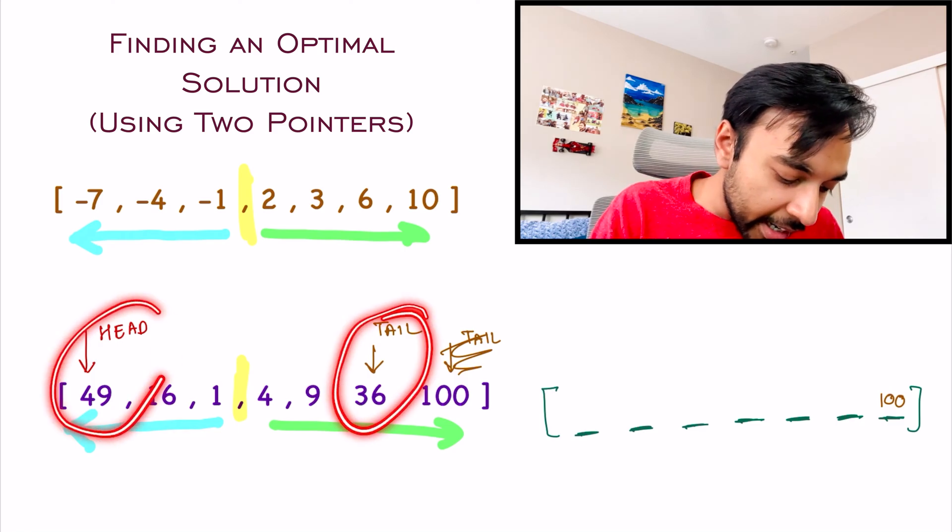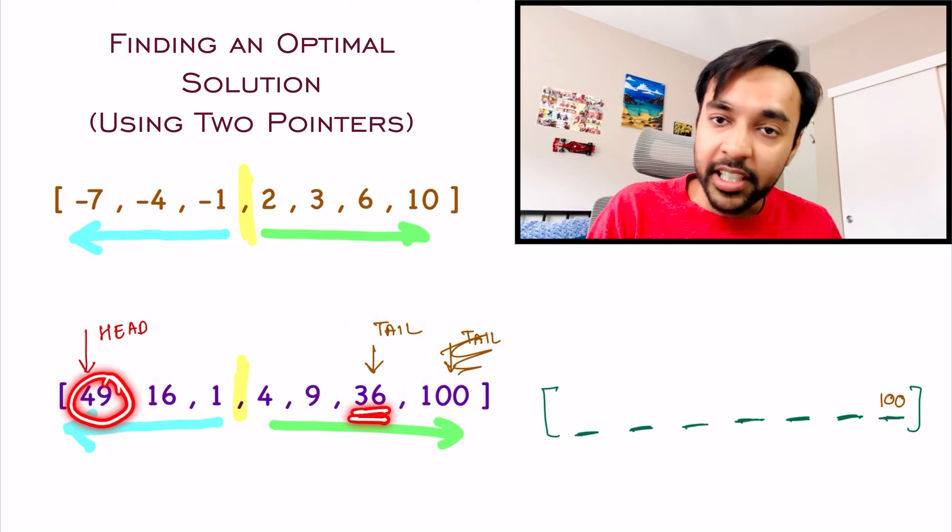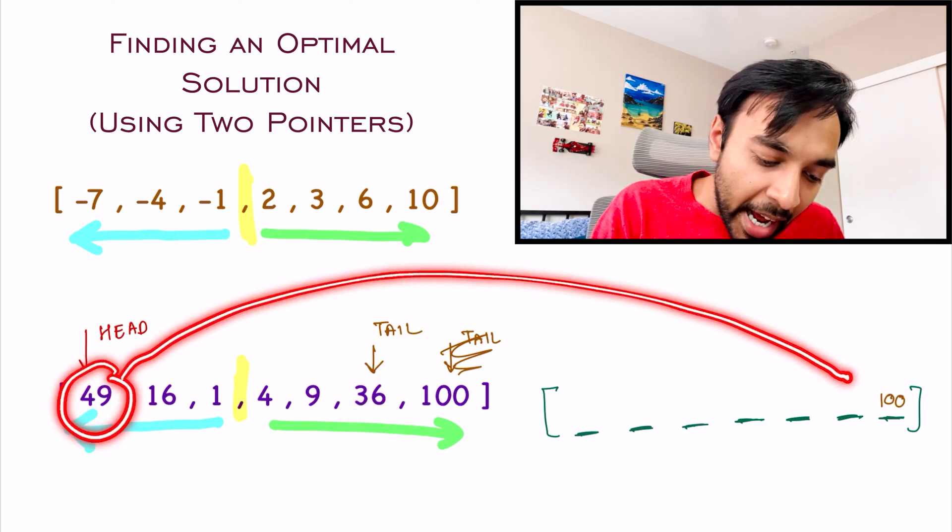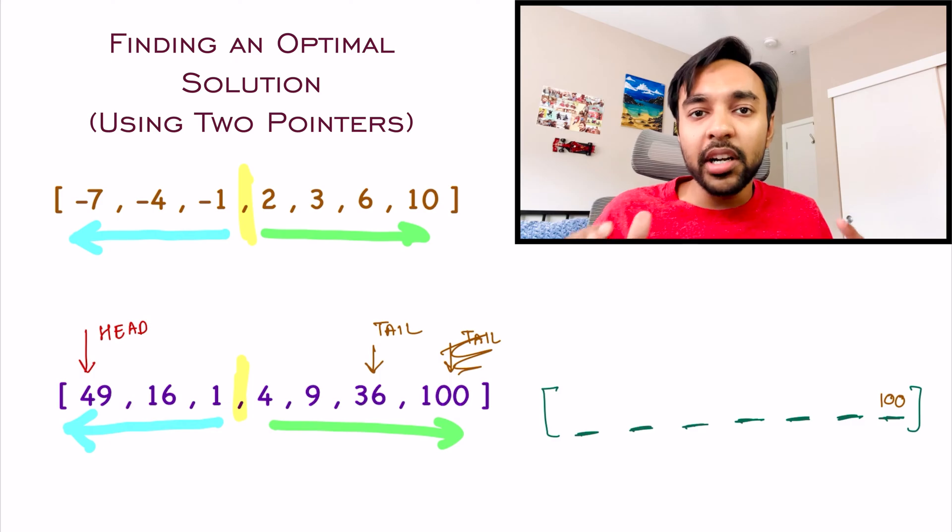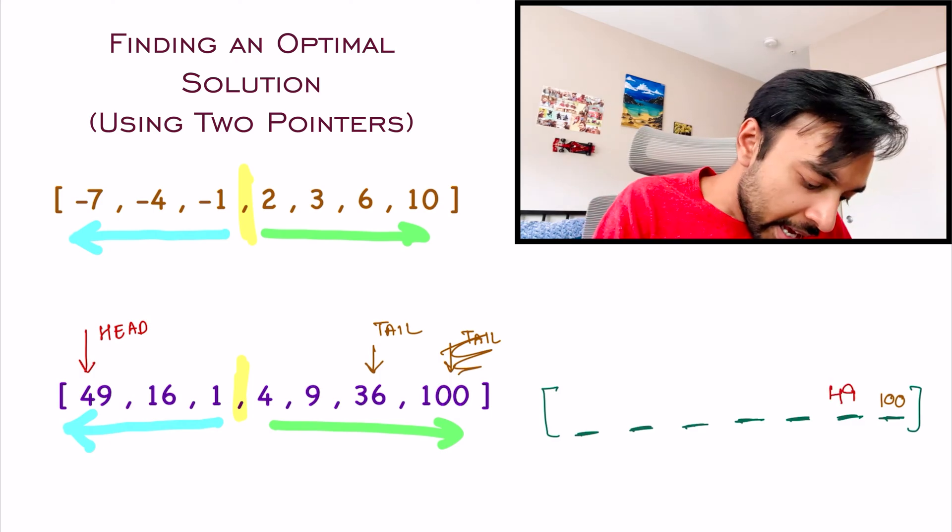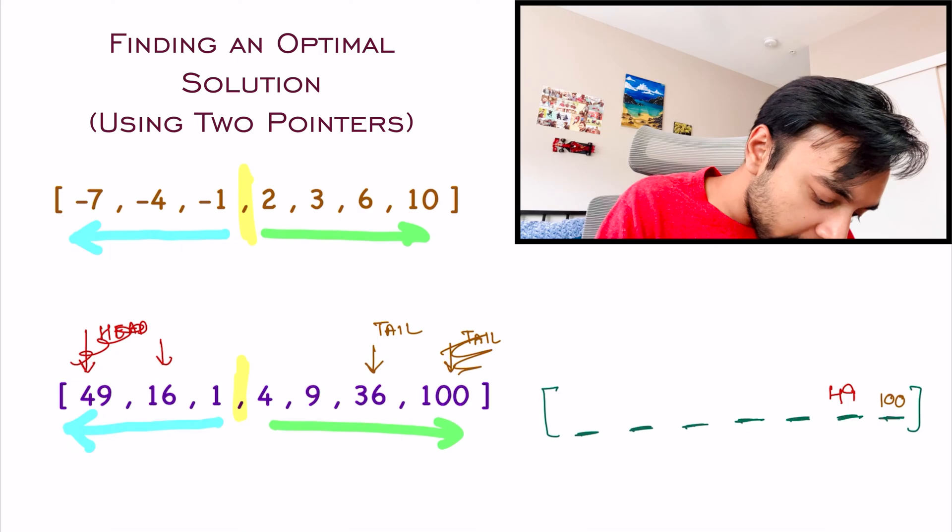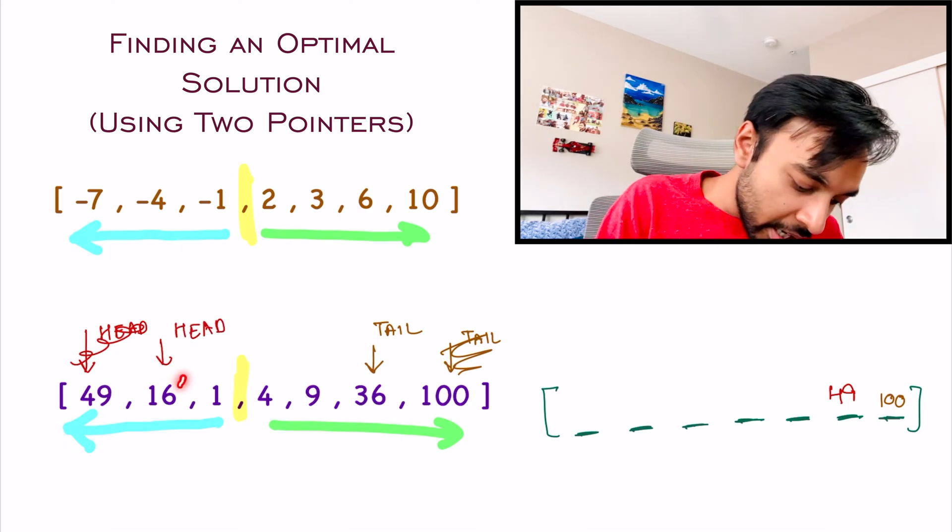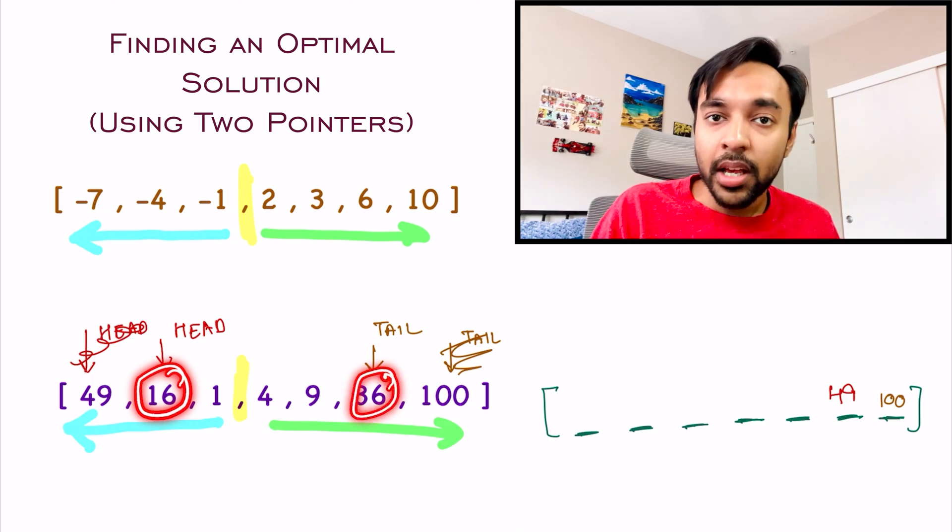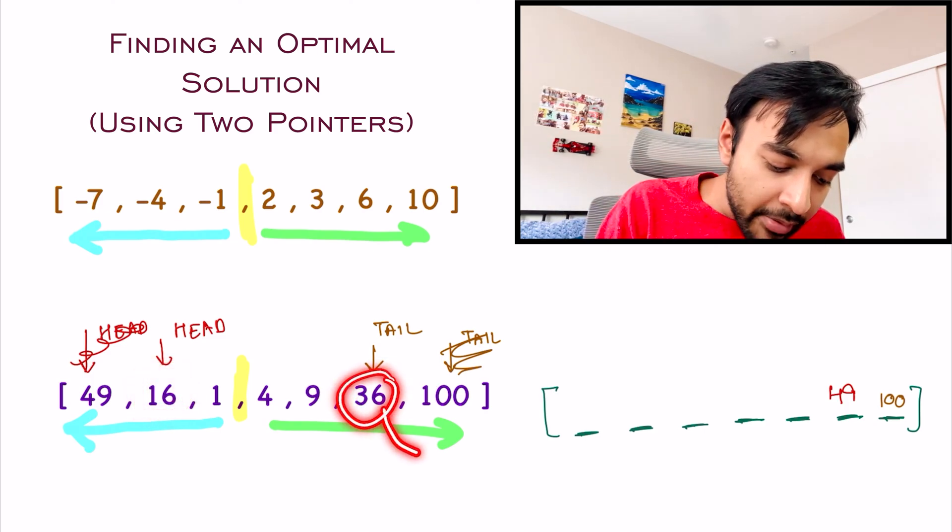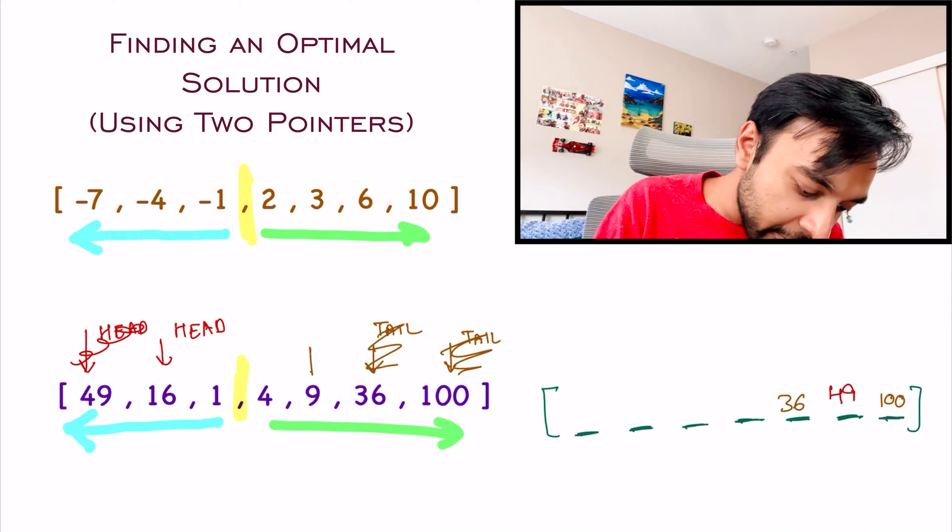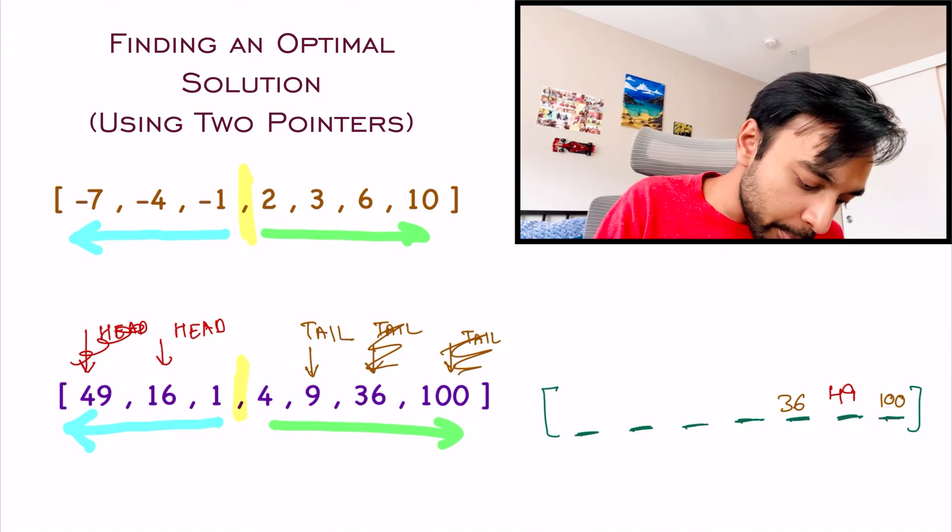So, what are you gonna do? You will take this 49 and add it as the second last element in your result array. And, once you have added it, move your head pointer one step ahead. Once again, just repeat the same process. Compare 16 and 36. Because 36 is larger, I will put 36 in the next available position of my output array. And, I will take the tail pointer one place back.